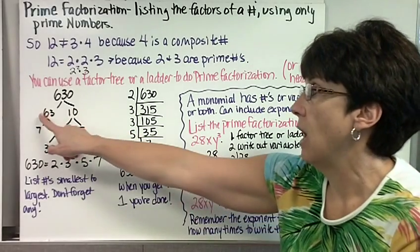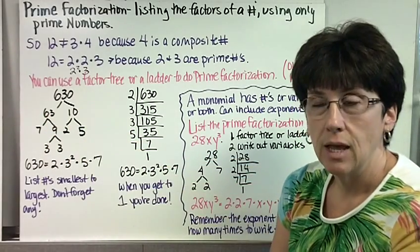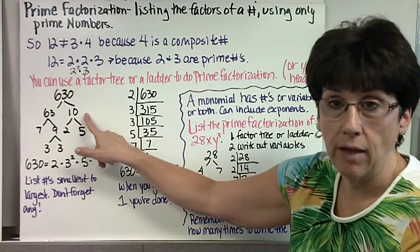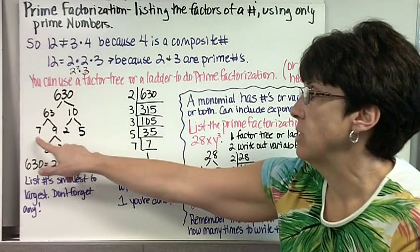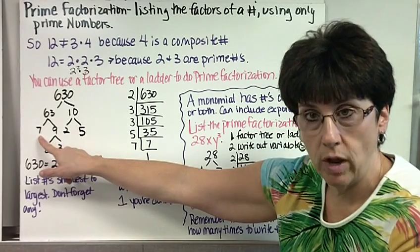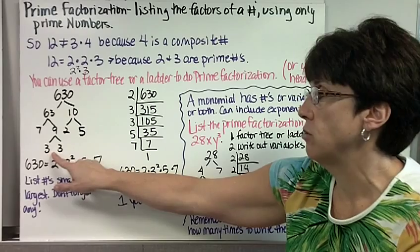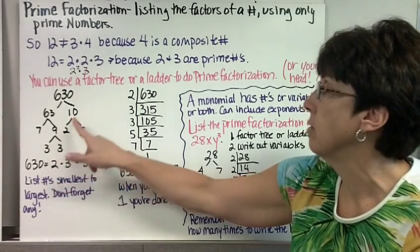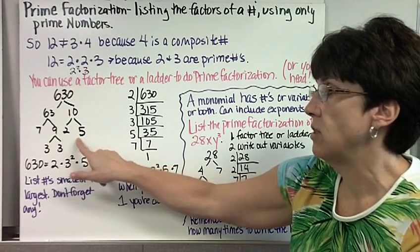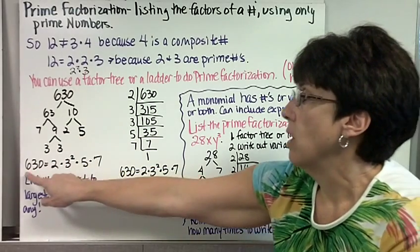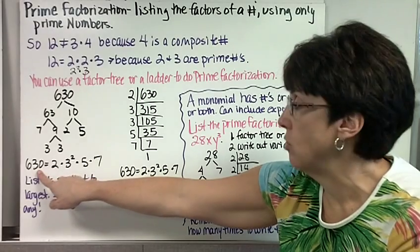First, I'm going to do it in a tree. I'm going to say 63 times 10. Now there are a lot of factors. I just always, if it ends in a 0, have it be times 10. 63 is 7 times 9. 7 is prime, so I can stop there. 9 is 3 times 3, and those are prime, so I can stop there. 10 is 2 times 5, and those are prime, so I can stop there.